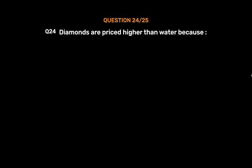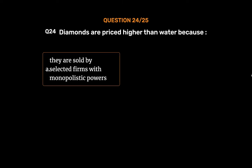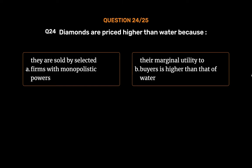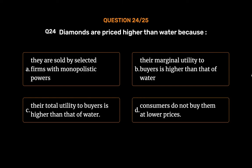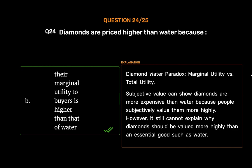Question No. 24. Diamonds are priced higher than water because: Option A. They are sold by selected firms with monopolistic powers. Option B. Their marginal utility to buyers is higher than that of water. Option C. Their total utility to buyers is higher than that of water. Option D. Consumers do not buy them at lower prices. The correct answer is Option B — their marginal utility to buyers is higher than that of water. This relates to the diamond-water paradox: marginal utility vs. total utility. Subjective value shows diamonds are more expensive because people value them more highly, though it still cannot fully explain why diamonds are valued more than an essential good such as water.